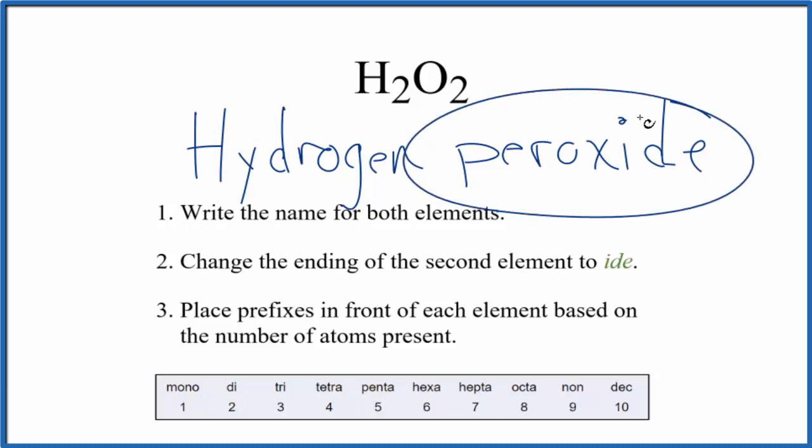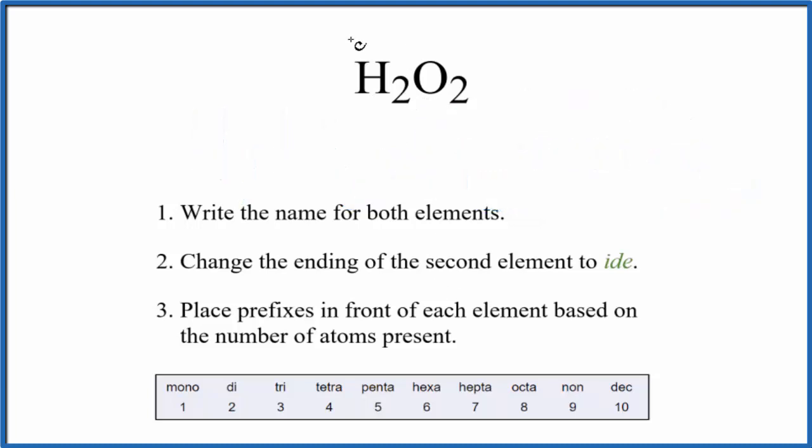A more formal way to write the name for H2O2 would be like this. Since we have a non-metal and a non-metal, this will be a molecular compound. We're going to use prefixes when we write the name.